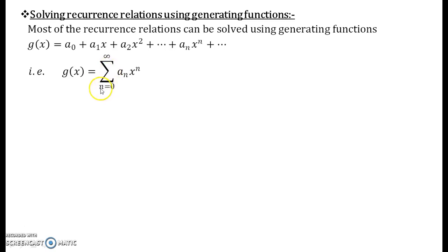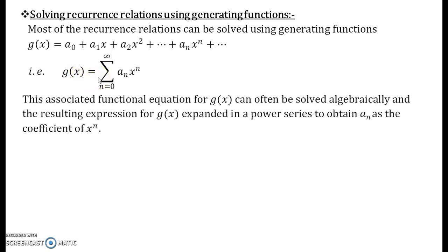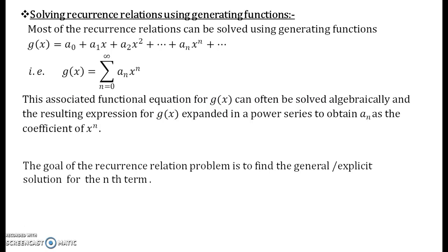Observe that for g of x the runner begins from 0 and goes up to infinity — that is the important part. Now, how do generating functions help us in solving the recurrence relation? The main goal of recurrence relation is to find a_n, either in the general solution format or in the explicit solution format.